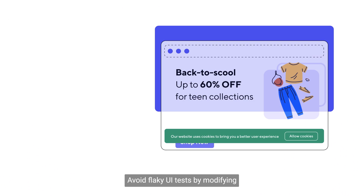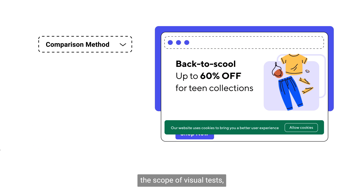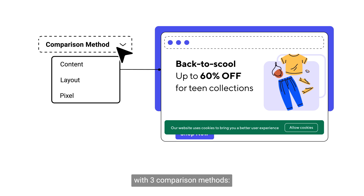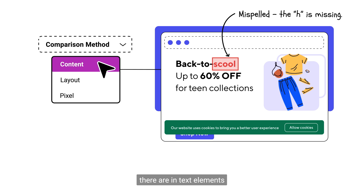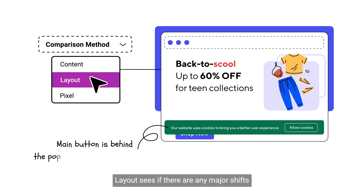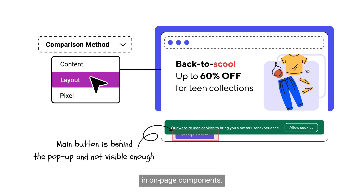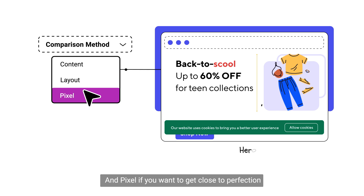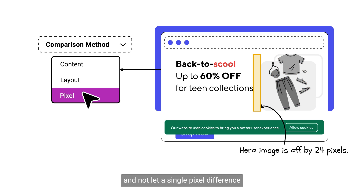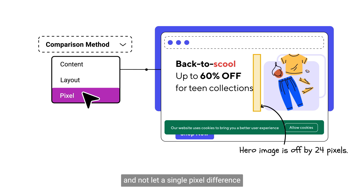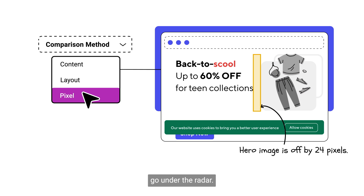Avoid flaky UI tests by modifying the scope of visual tests with three comparison methods. Content looks at any grammar or typos in text elements. Layout sees if there are any major shifts in on-page components. And Pixels, if you want to get close to perfection and not let a single pixel difference go under the radar.